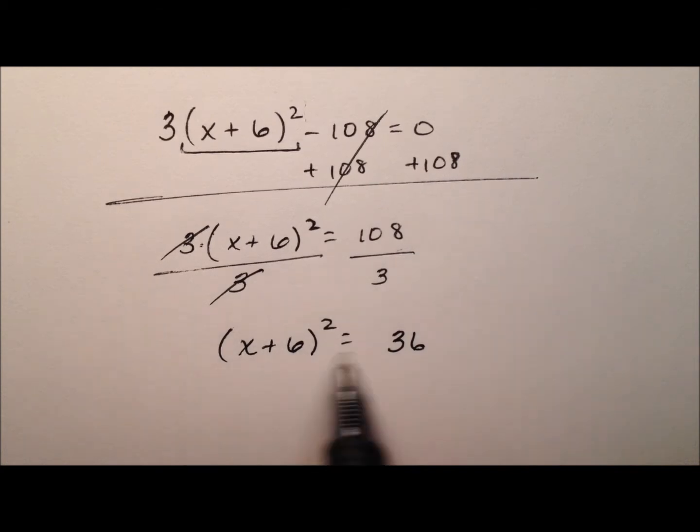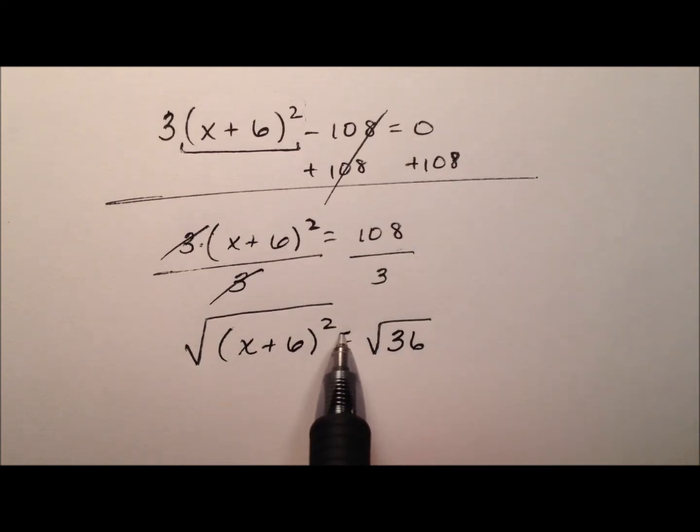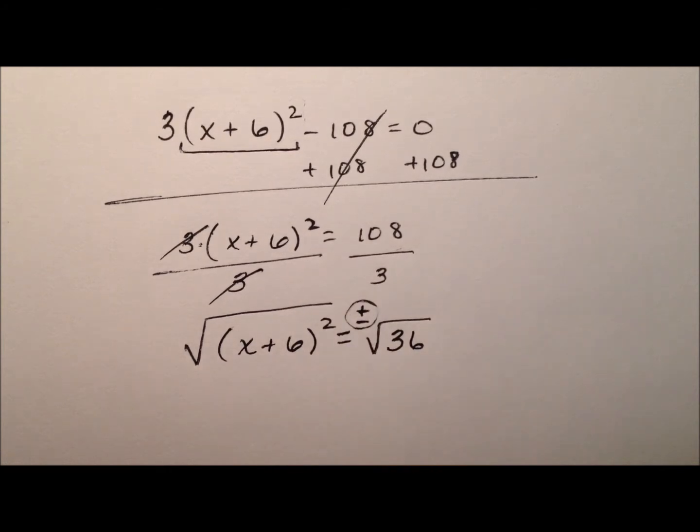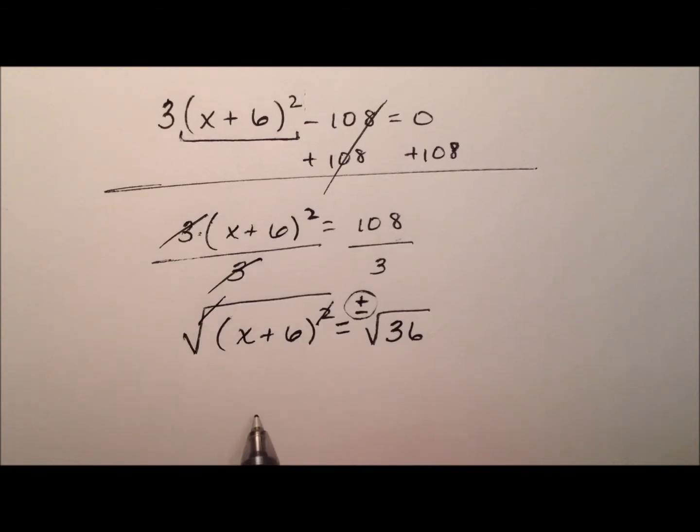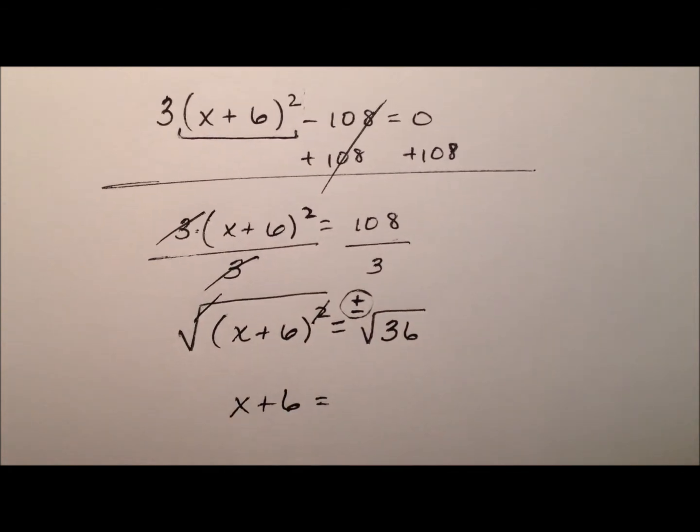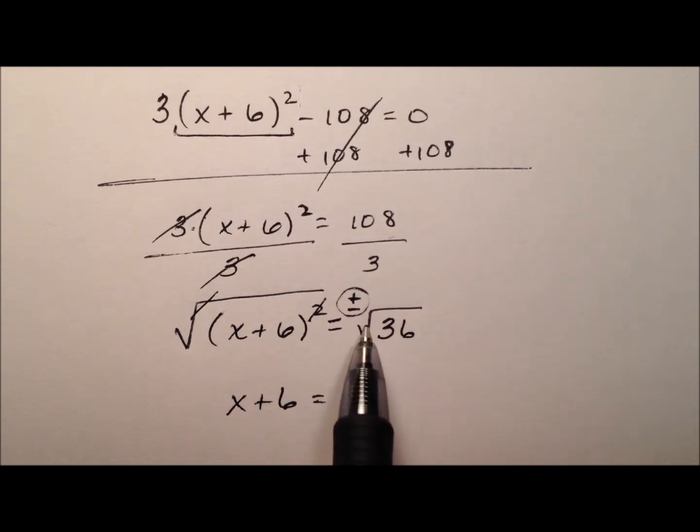Our square root principle says we're going to now do the square root of both sides of this equation. But one thing that students often forget, and let's not forget it, is that this right side with the numeric value requires a plus or minus. When we do the left side, the square and the square root cancel, so we have x plus 6 equals, but on the right side, we have plus or minus the square root of 36, which is 6.